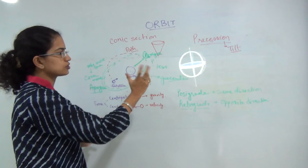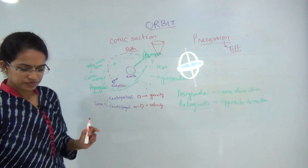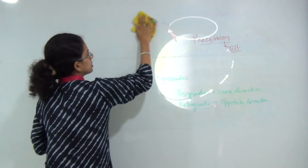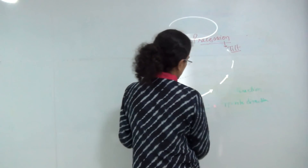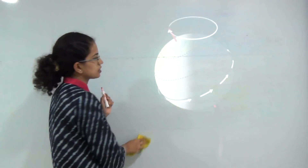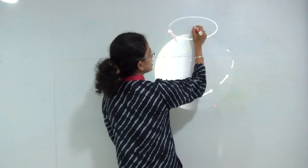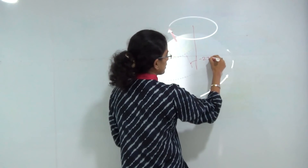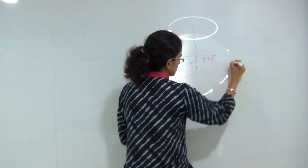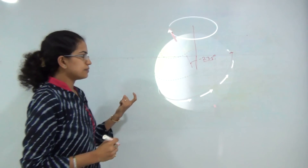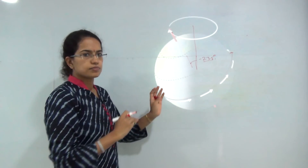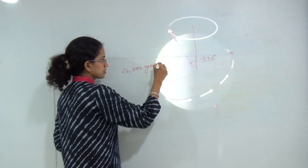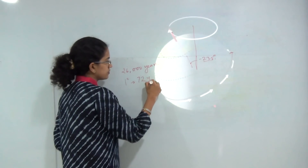This is a general gyroscope demonstrated here to show what precession is. Now let's understand the precession of the earth. Earth is tilted on its axis at 23.5 degrees. If it were not tilted, the axis would be straight up. The rotation of the earth takes place along this 23.5-degree angle. As mentioned, tilt is a necessary condition for precession to occur. Earth's precession cycle completes in 26,000 years, or equivalently 1 degree of precession takes place in 72 years.